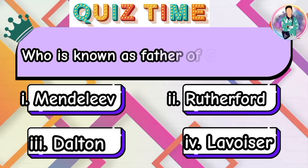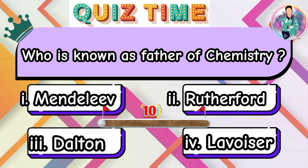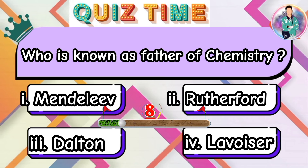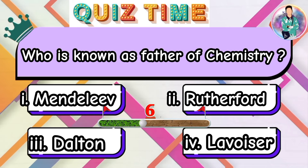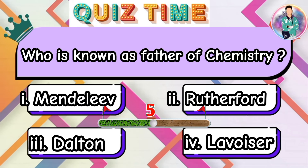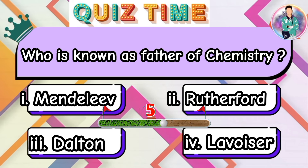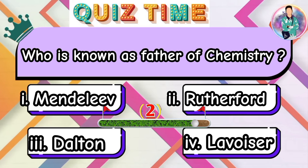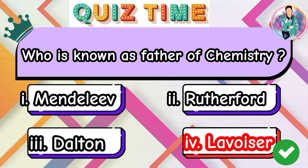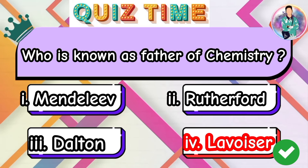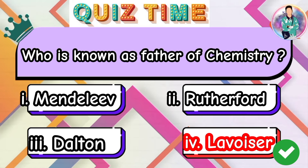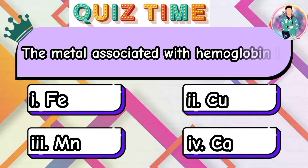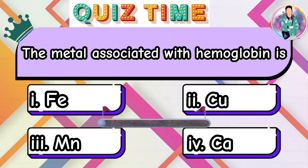Who is known as the father of chemistry? The metal associated with hemoglobin is?